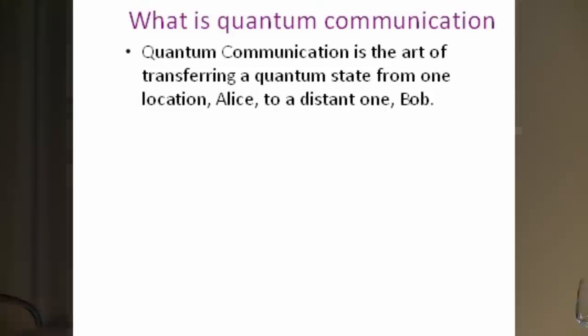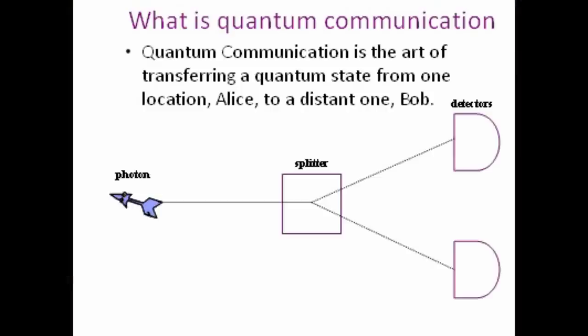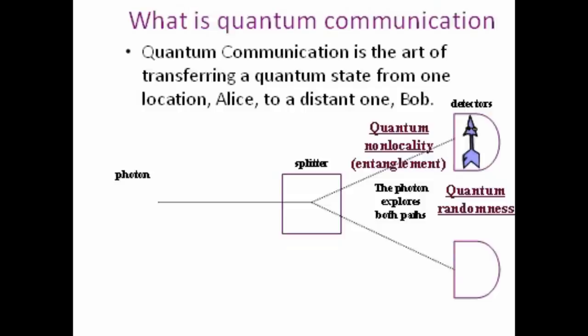How do you do quantum communication? Abstractly it's quite easy: you take a photon, you send it on a beam splitter, and after the beam splitter the photon explores both paths and encounters two detectors, but only one detector will click. The fact that the photon explores two possible paths is what comes under the name of quantum non-locality or entanglement, and the fact that only one of the two detectors detects the photon is quantum randomness. These are the two ingredients we need for QKD.